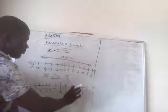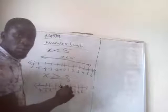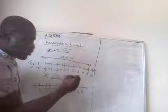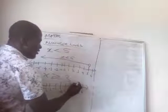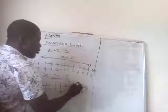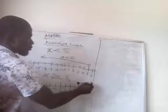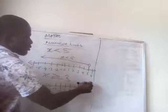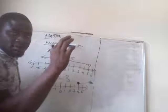So from 3 now, greater than or equal to. So from 3, you shaded it since there is equal to sign. From here now, you draw your arrow. Your arrow moves to the right since it's greater than.